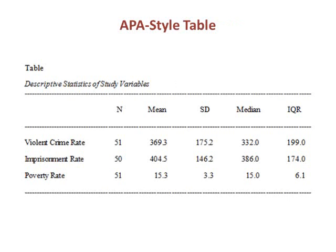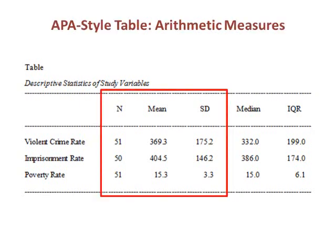Here is an example of an APA style table reporting descriptive statistics. It is general practice to include descriptive statistics for both numeric and categorical variables in a study to familiarize readers with the data. APA style does not require specific elements to be in the table, though in this table I have included both arithmetic and positional measures of central tendency and dispersion. However, arithmetic measures are important to report because most bivariate and multivariate statistics build on the n, mean, and standard deviation. In the video on the normal distribution, we will see situations in which reporting the median and interquartile range may also be important.